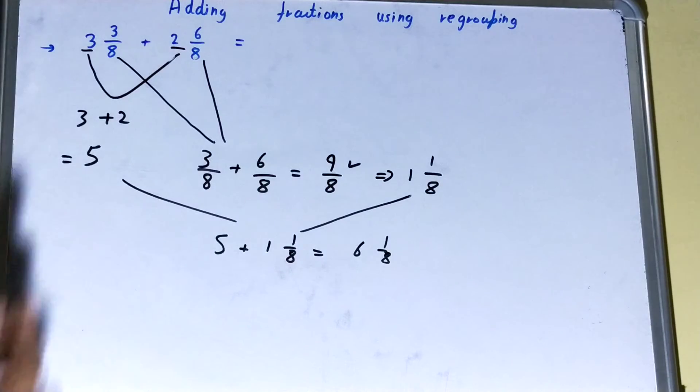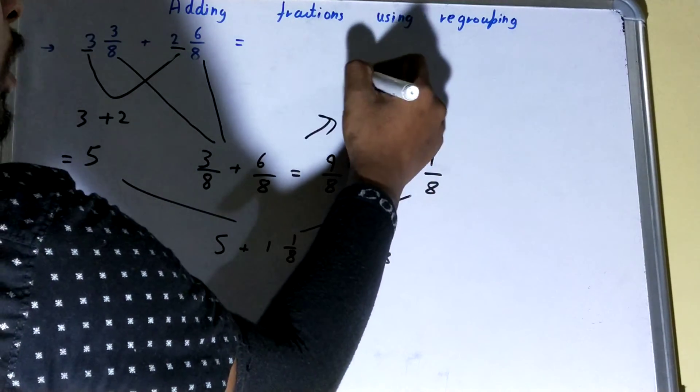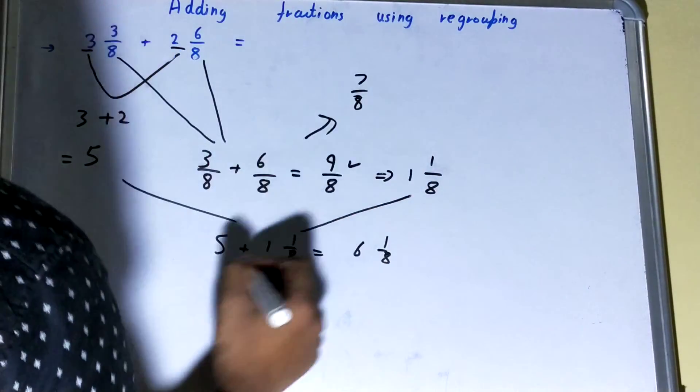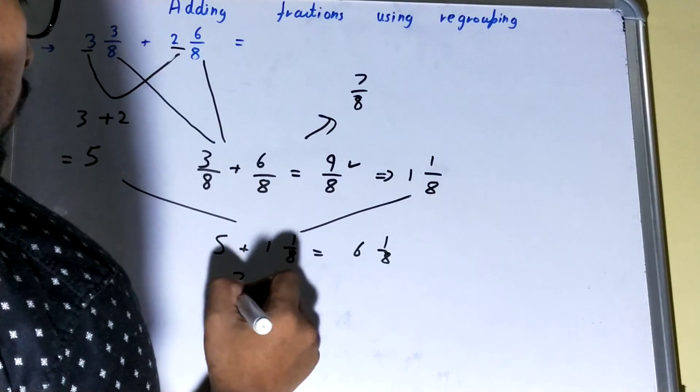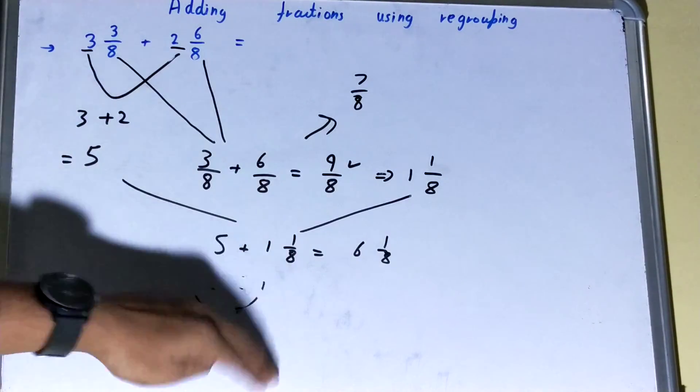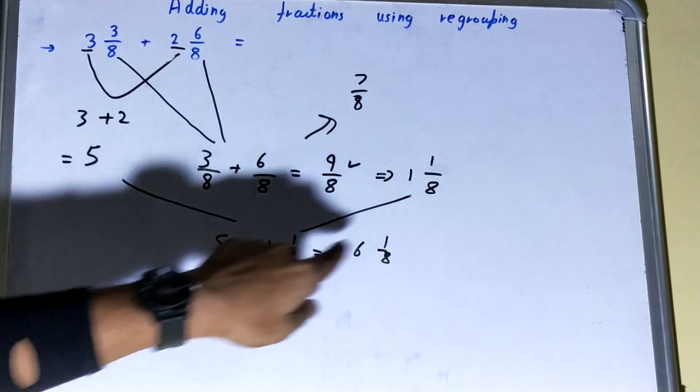If the numerator was smaller compared to denominator, like 7/8, then you could just directly write it as 5 7/8 as your answer. Then you did not need to add further steps. But right now because the numerator was greater, that's why I had to convert it into mixed fraction form and then add it.